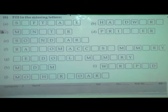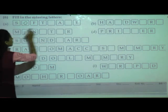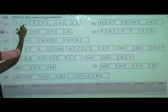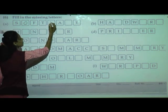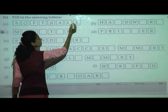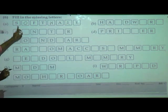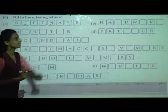What is the first number? The spelling is S-O-F-T-W-A-R-E: software. The spelling of software is S, O, F, T, W, A, R, E — software. Next one: hardware. The spelling of hardware is H, A, R, D, W, A, R, E — hardware.